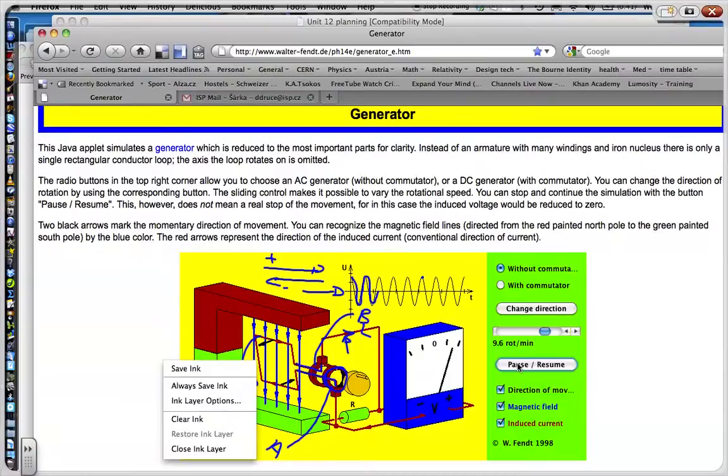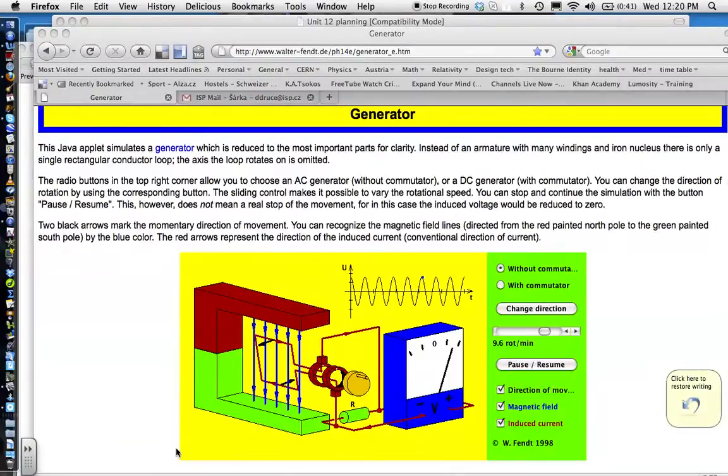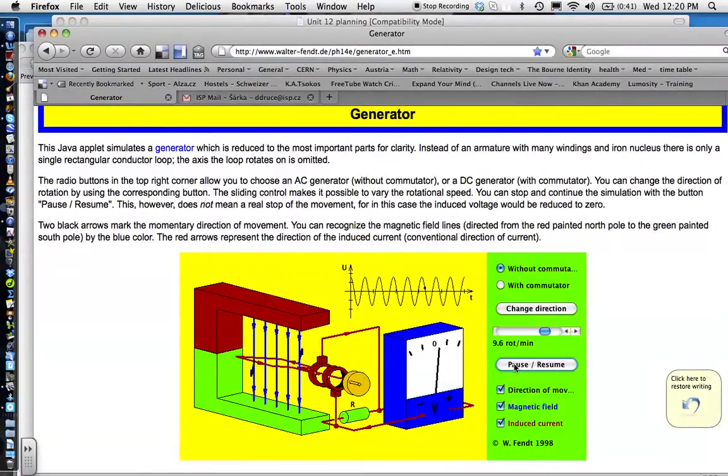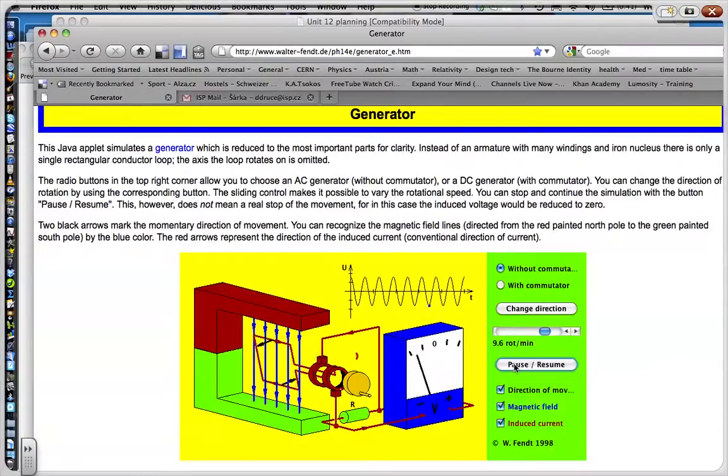Let's run the simulation again, the app again, just to see that. So notice there, notice how it's changing, the direction is changing. This changing direction gives us the idea of alternating current.